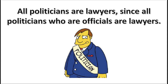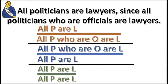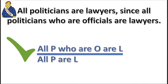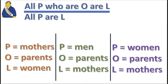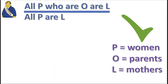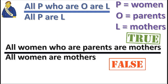Here's another practice problem. What is the form of this argument? Press pause — the answer is in three, two, one. That's correct. Now, what set of substitutions proves this form invalid? This set of substitutions makes the premise true and the conclusion false.